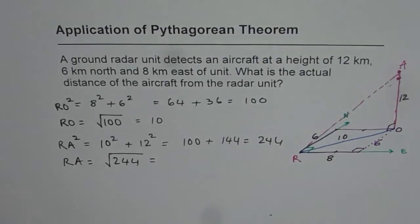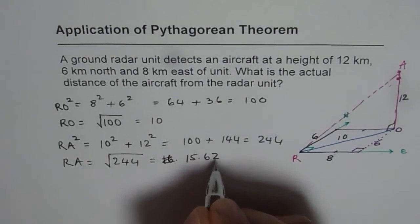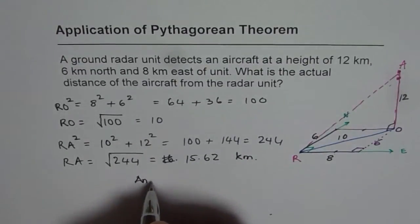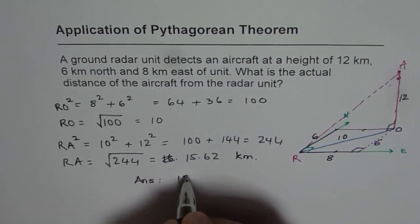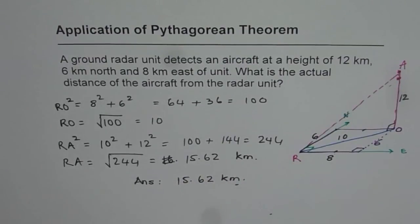So that is RA which is equal to square root of 244. We can use calculator and find this answer. So we have square root of 244, which is equal to 15.62. 15.62 and the units are kilometers. So our answer is 15.62 kilometers.